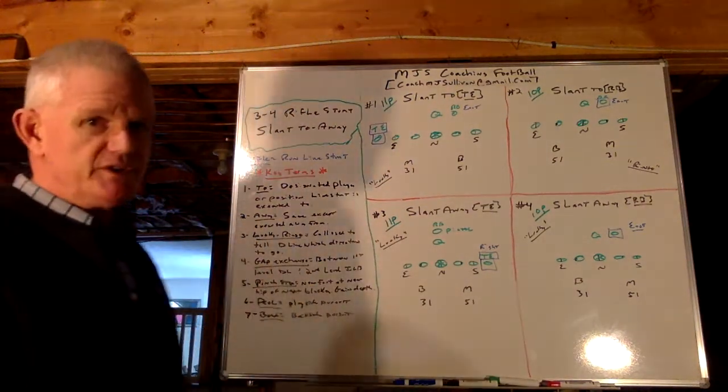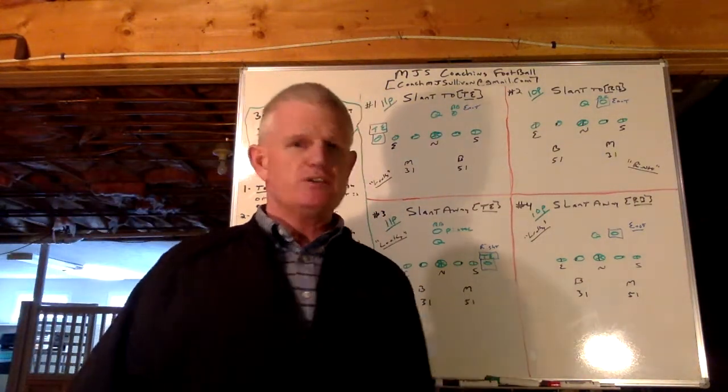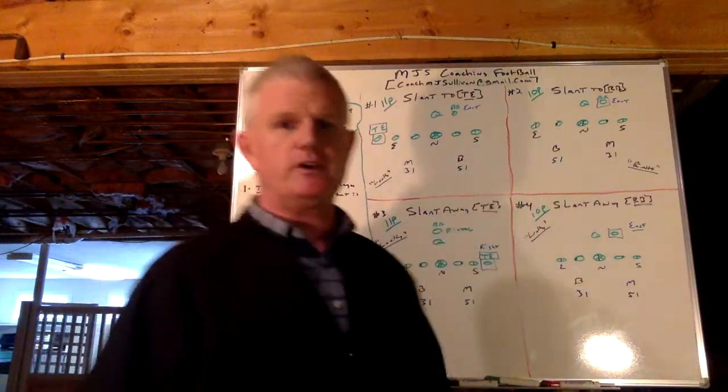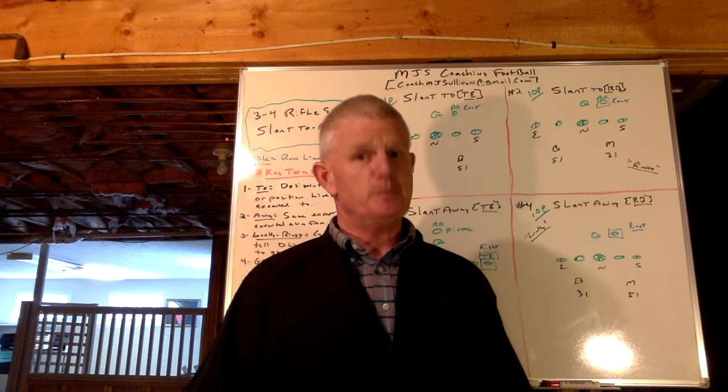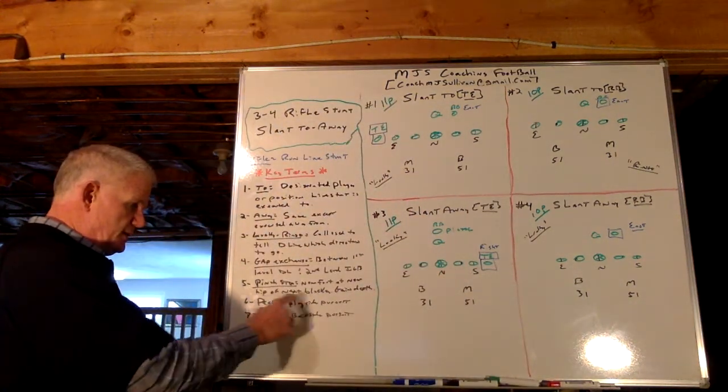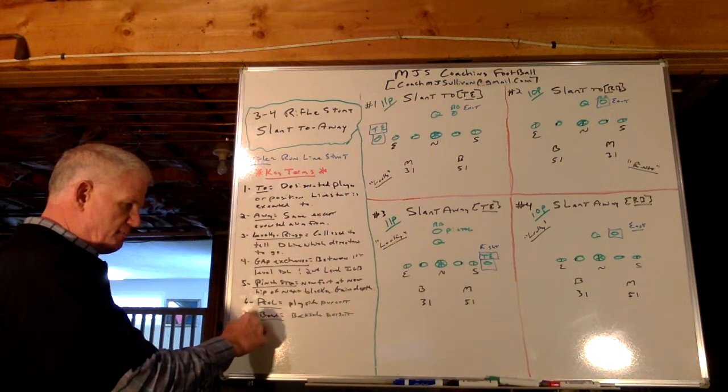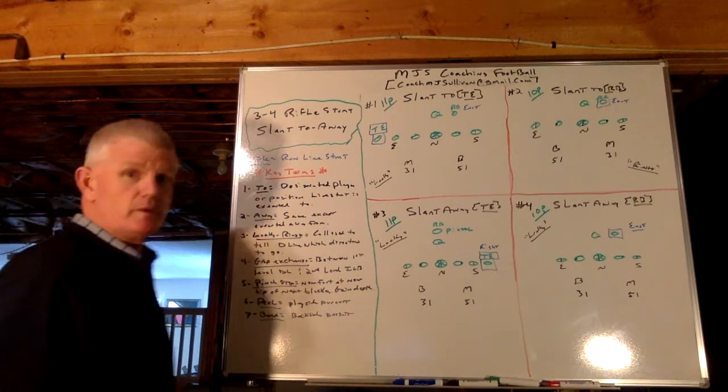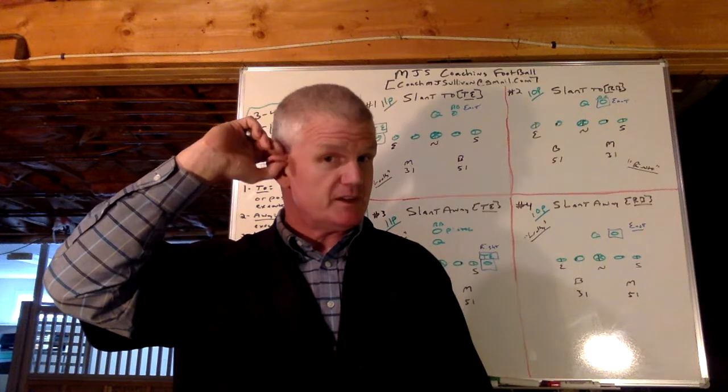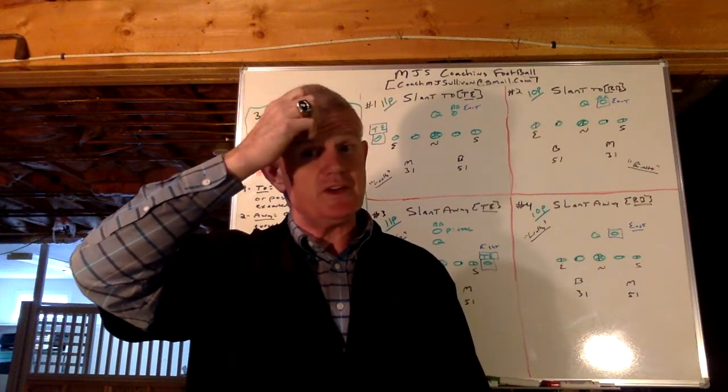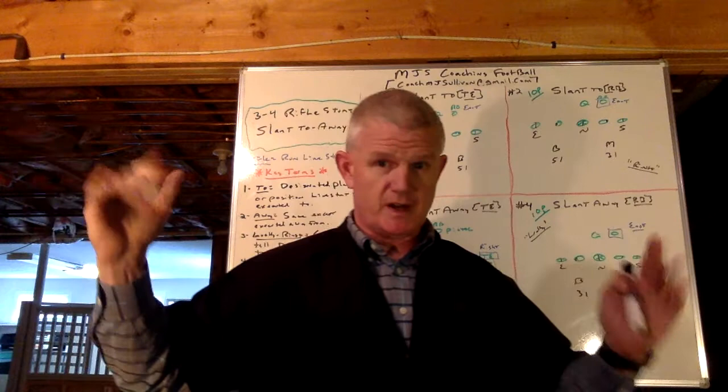The peel is a play side pursuit. We're going to give you just one time, one scenario where the play side lineman's going to have to peel. P, play side pursuit. B, bend, back side pursuit. Utilizing the same blocking scheme, we'll show you the play side defender and the back side defender and what the coaching points are.